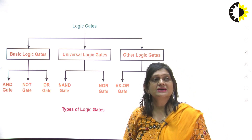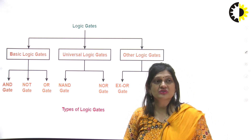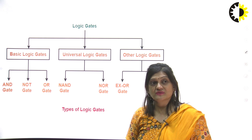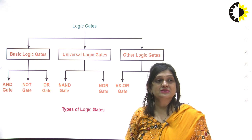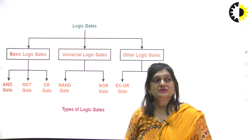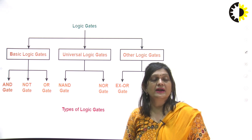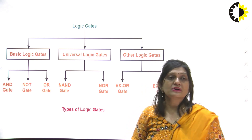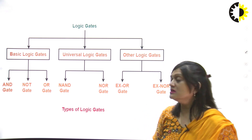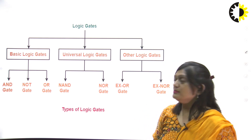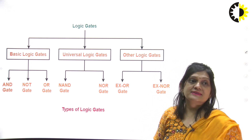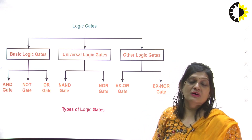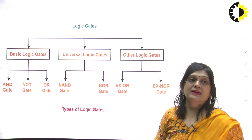Some logic gates are basic logic gates and some are universal logic gates, and some are other gates. AND, NOT, and OR are the basic gates. NAND and NOR are called the universal gates.